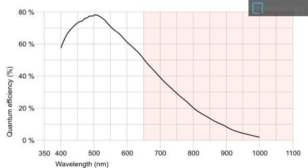The last but not the least is quantum efficiency — the efficiency of the camera sensor to convert light energy of photons into electric energy or electrons. The efficiency is usually specified as a curve plotted against the wavelength of light. For example, here is the quantum efficiency curve of the Sony IMX 174 sensor. It reaches peak efficiency at a wavelength of 525 nanometers, which is in the green spectrum band.